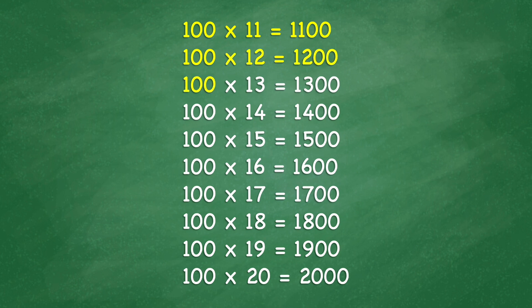100 times 13 equals 1,300. 100 times 14 equals 1,400. 100 times 15 equals 1,500. 100 times 16 equals 1,600.